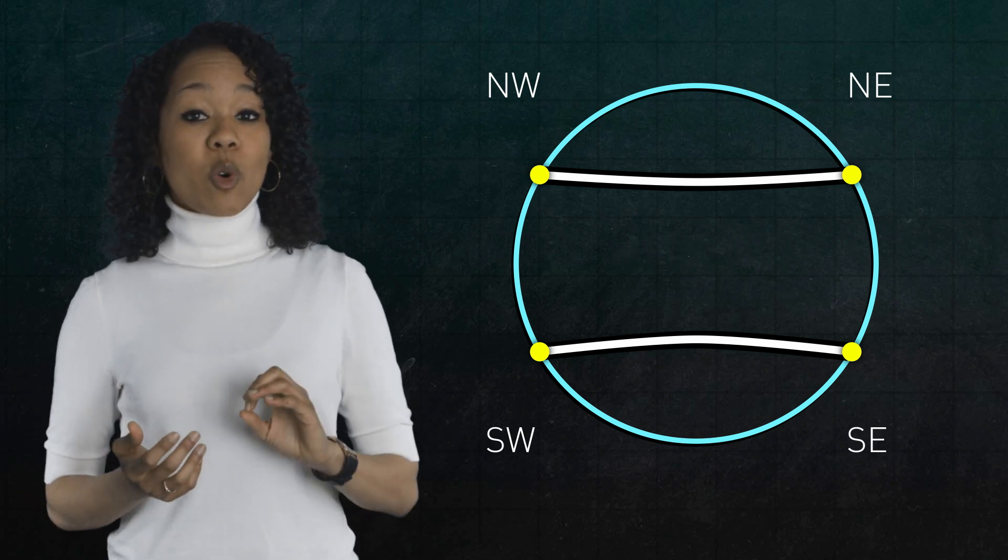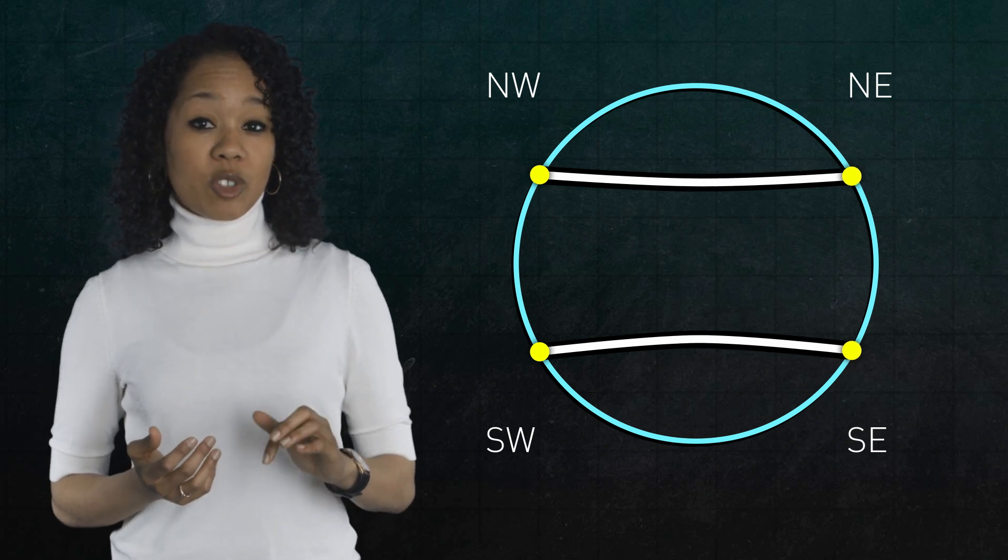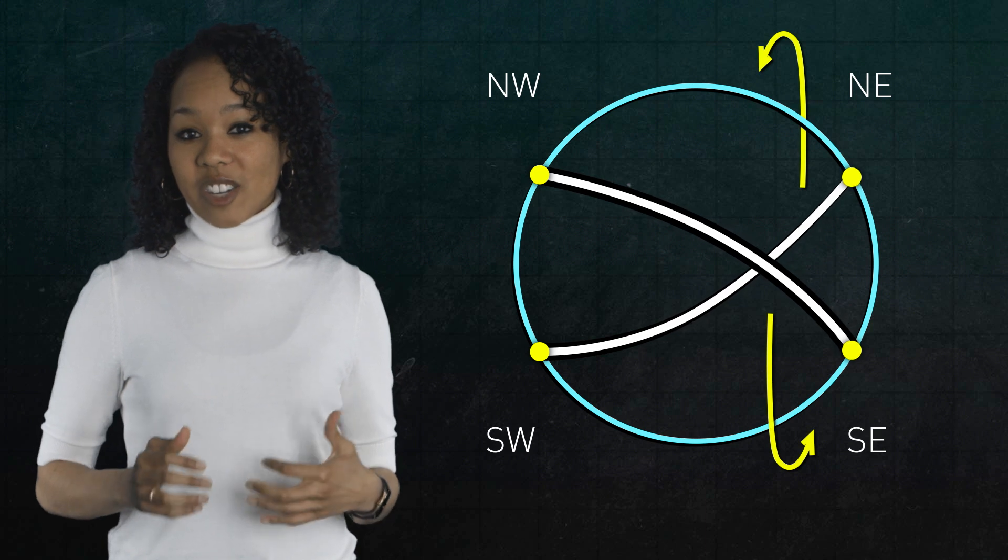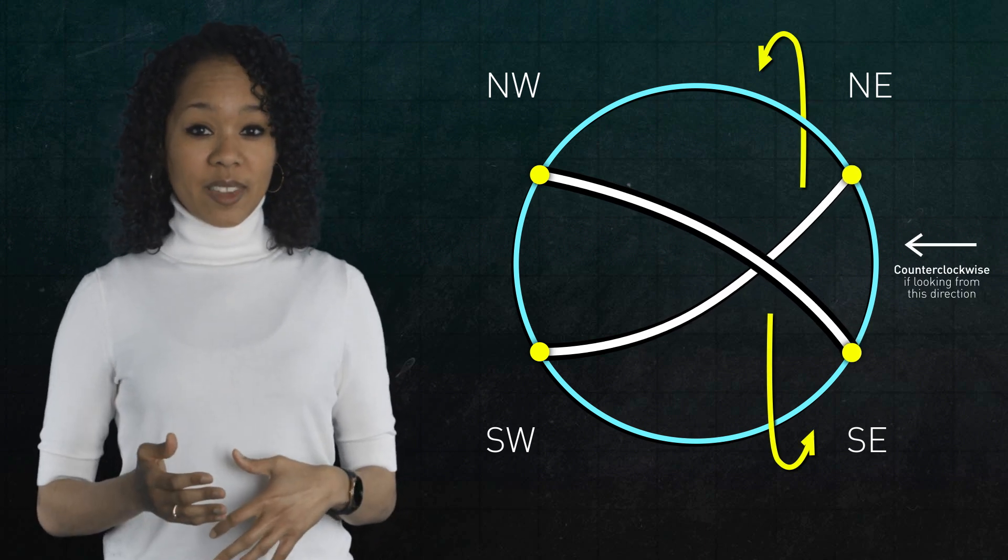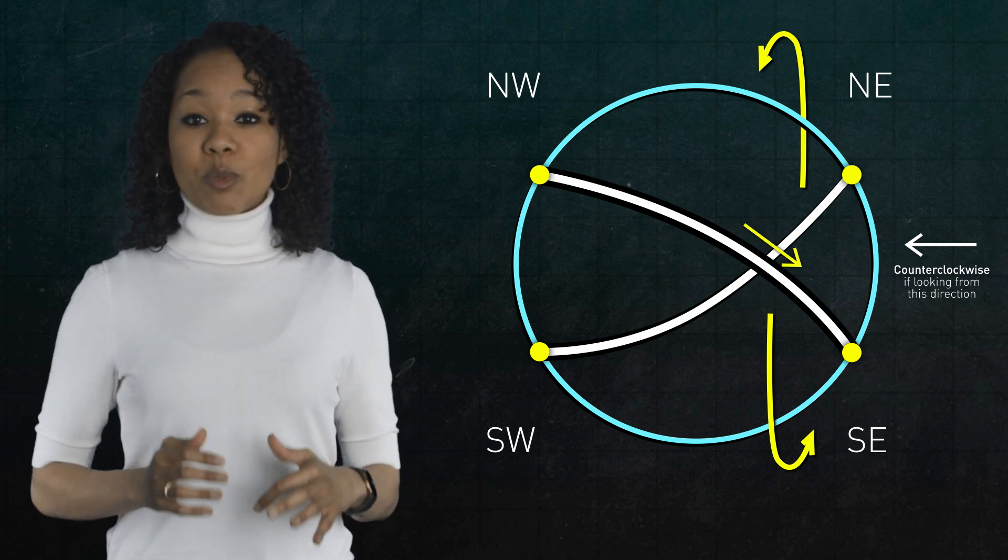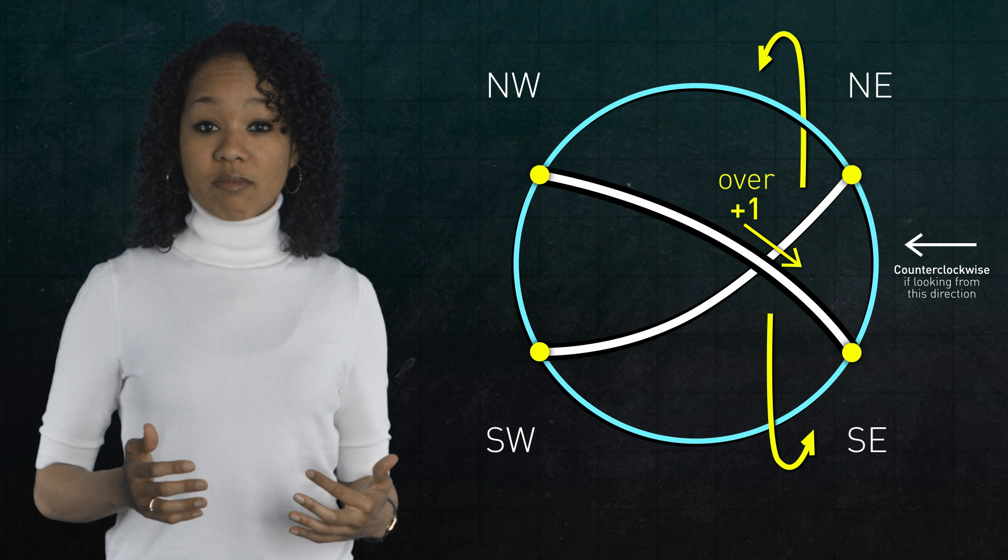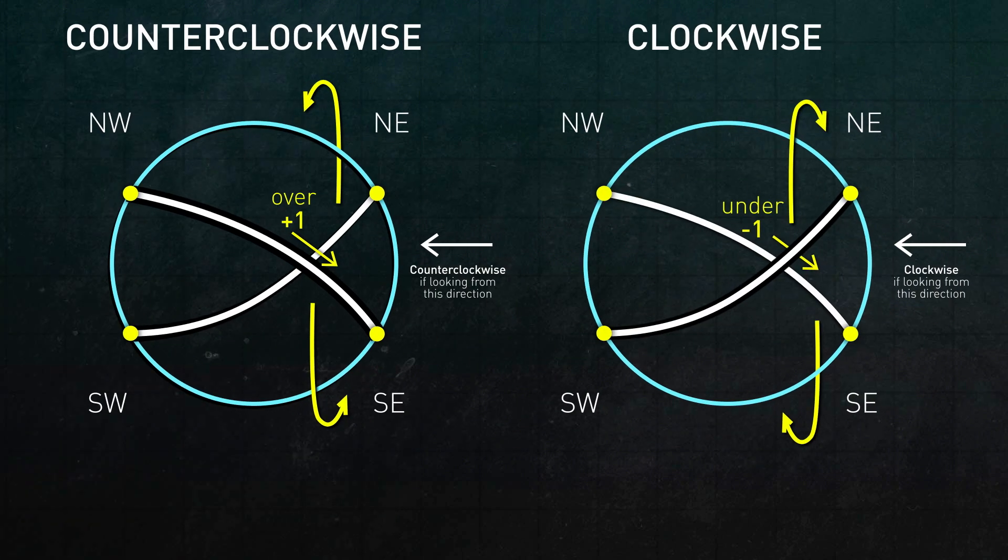First, you can twist horizontally. Imagine holding the left ends of the two strings while twisting the right ends around each other. Let's say counterclockwise if we're looking this way. So notice that the top string goes over. This move corresponds to plus one. And if you wanted to rotate clockwise so that the top string goes under, then the move corresponds to minus one. That's the first move.